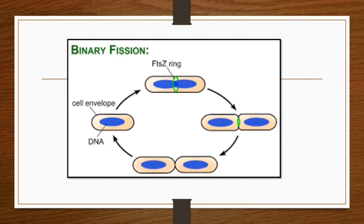In the diagram of binary fission, the first image shows elongation of the bacterial cell. The second diagram shows a septum or cross wall forming at the middle of the bacterial cell. Finally, the individual daughter cells separate out from the parental cell.